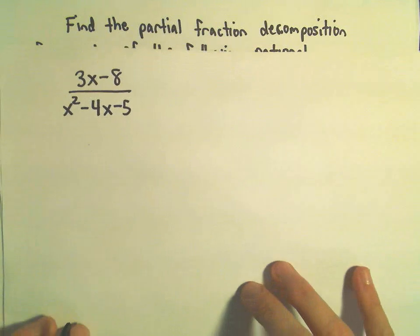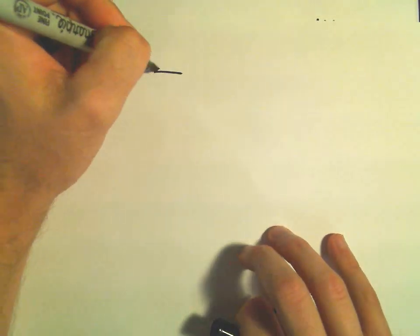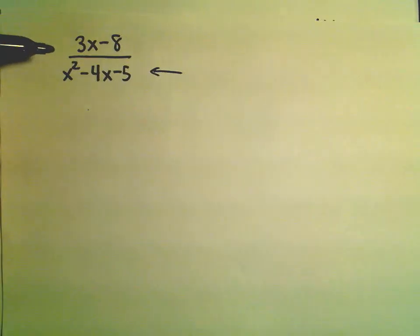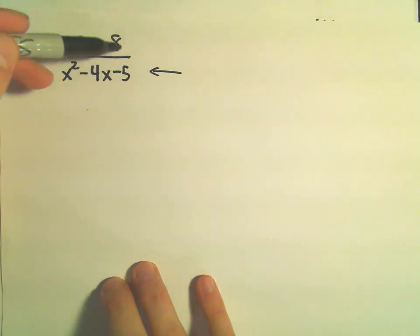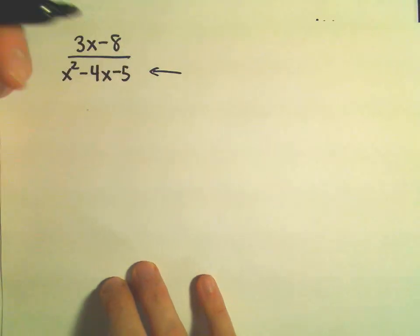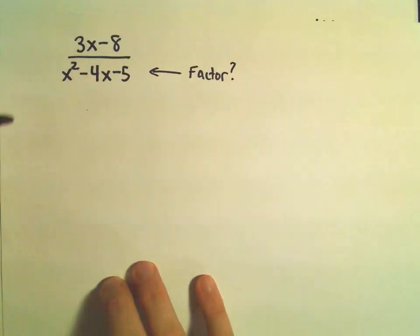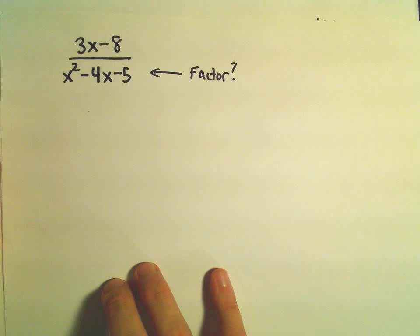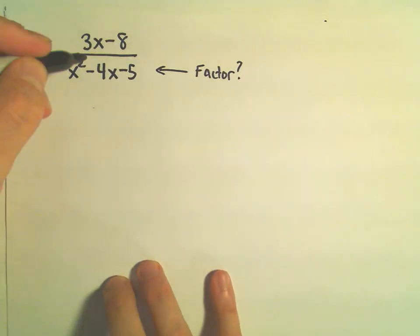And again, when you have one of these partial fraction decompositions, the first thing I always think about, well there's a couple things. First off, the degree of the numerator always needs to be strictly less degree than the denominator, which we have here. The next thing I think about is, does the denominator factor? And depending on how it factors, that'll tell us how the decomposition breaks apart.